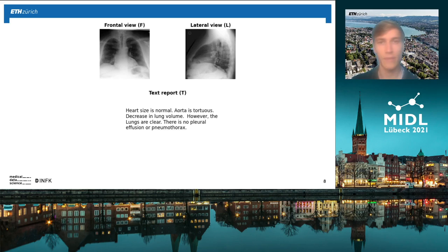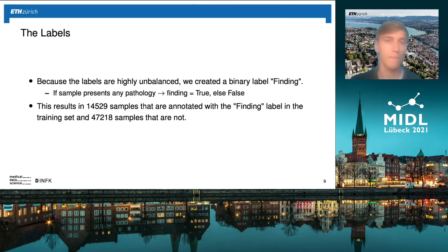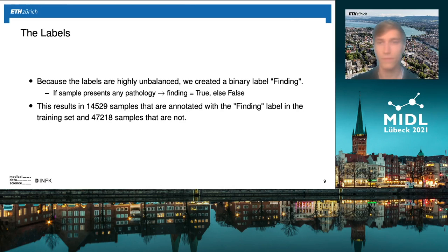Each sample in the database is also labelled with one or multiple pathologies, but because these labels were highly unbalanced, we created a binary label called 'finding' — if a sample presents any pathology we set this finding label to true, otherwise to false. This results in 14,500 samples annotated with the finding label in the training set and 47,000 samples that are not, so it is still pretty unbalanced.